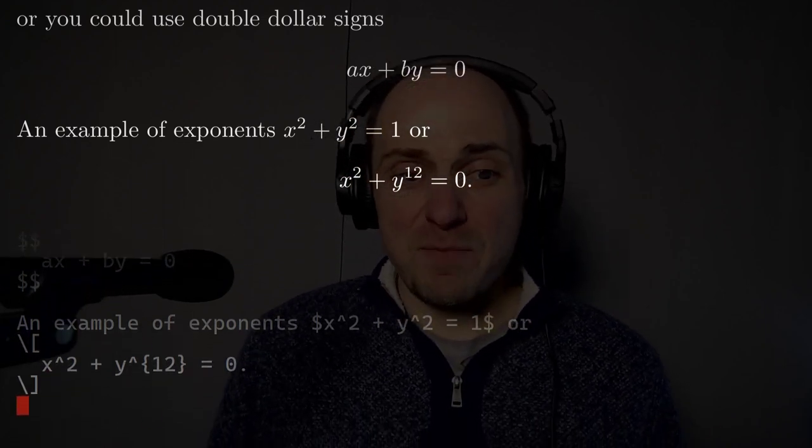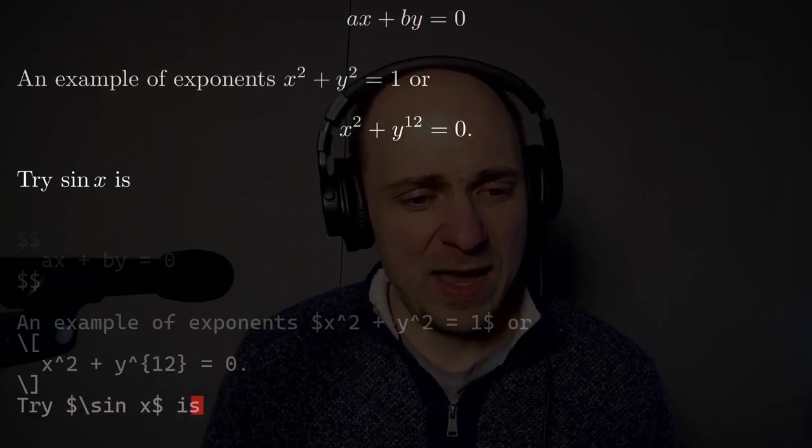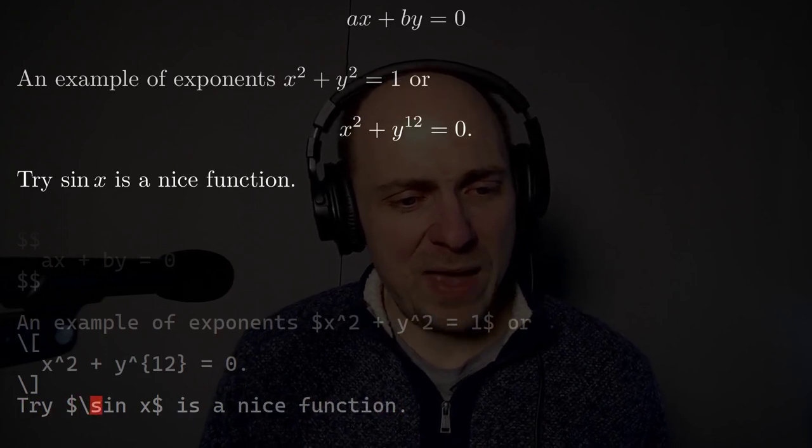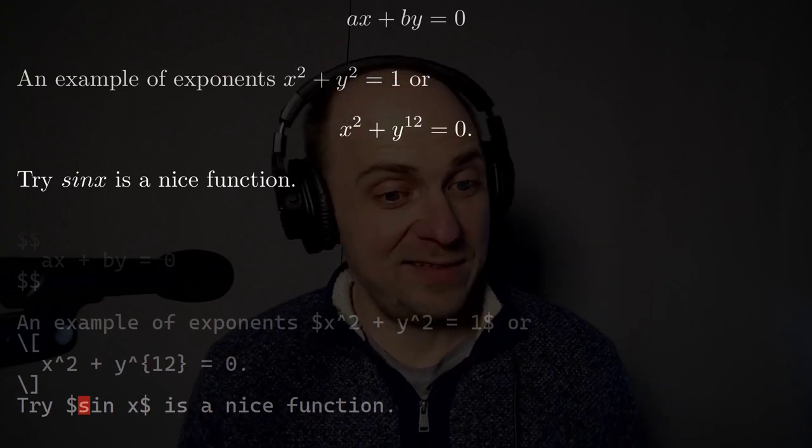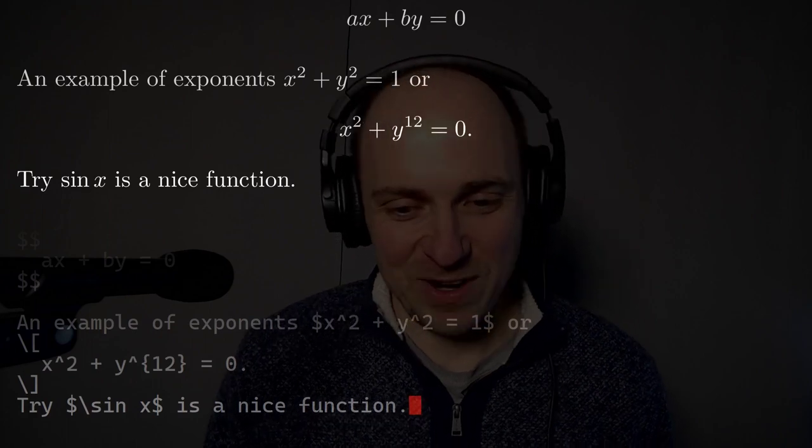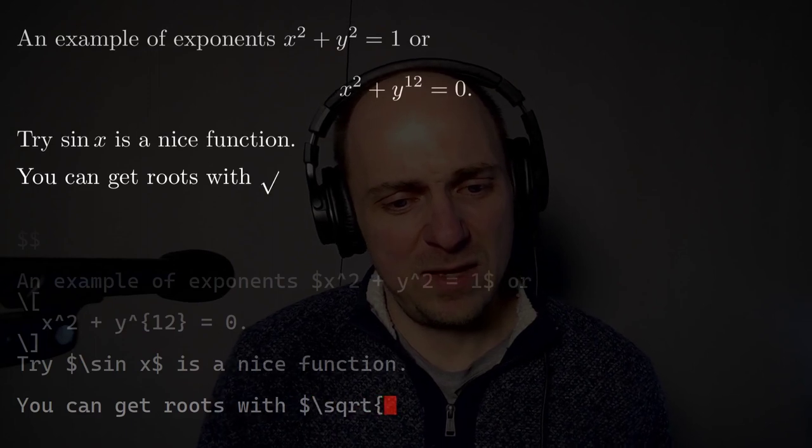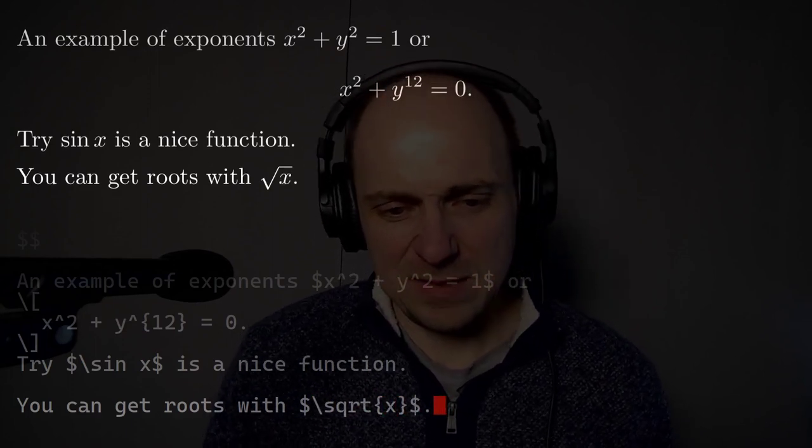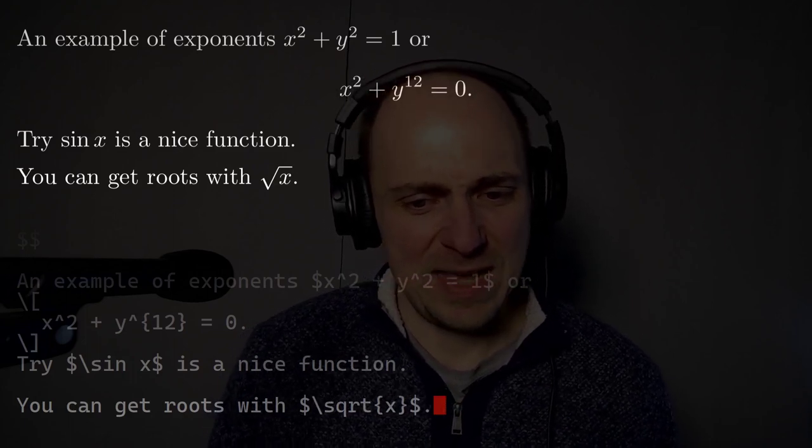You can use some of your favorite mathematical functions. You can try like backslash sine of x is a nice function. Now if you didn't put that backslash there, then it would just look like the variables s times i times n times x. So it looks a little bit better when you put the backslash in front of sine there. So you can get roots with say backslash square root of x. So that's certainly a useful thing to be able to do as well.